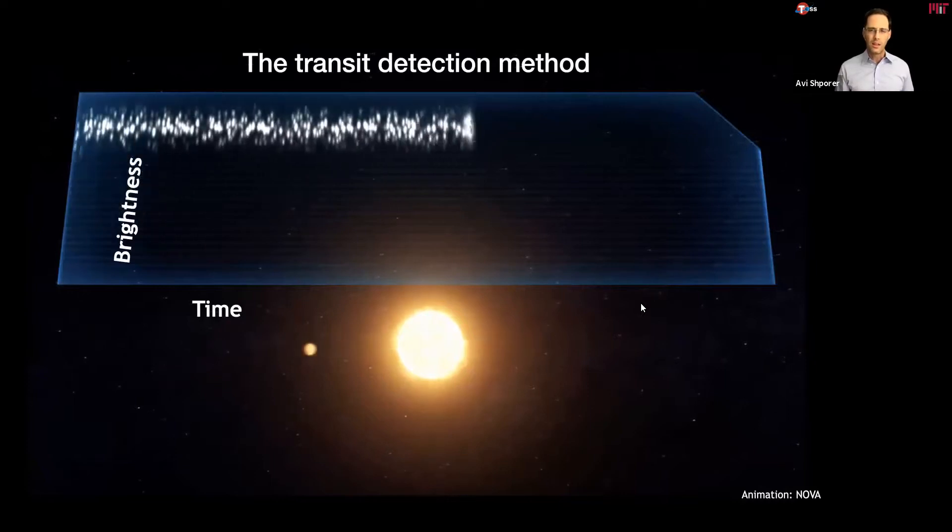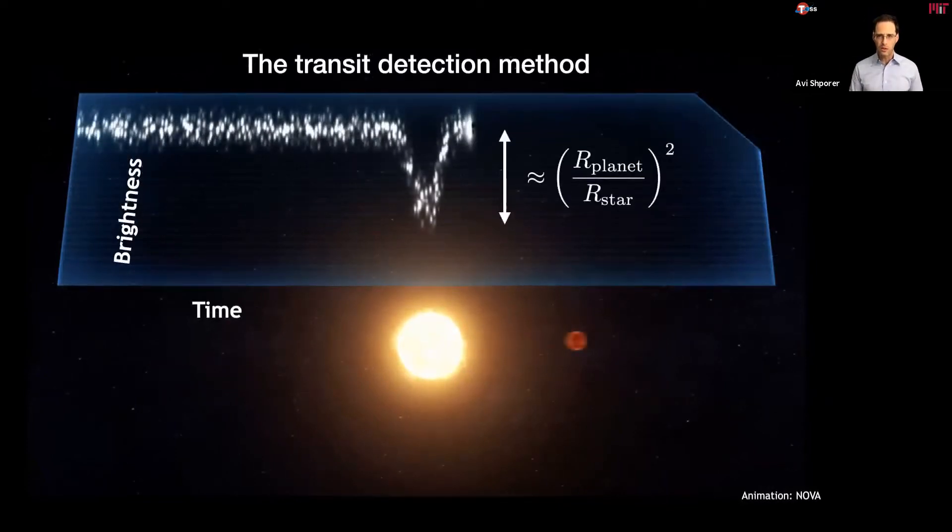And the depth of that transit gives us the radii ratio. And since we can estimate the radius of the star, of the host star independently, we can get from the transit depth, we can measure the size of the planet, meaning we can measure the size of the planet that we cannot see directly.